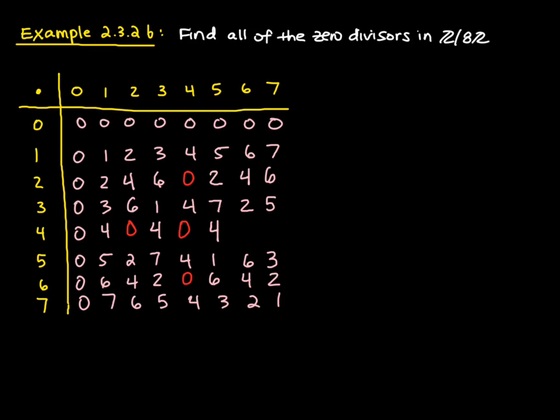Four times six is twenty-four—another zero. Finally, four times seven is twenty-eight, congruent to four.